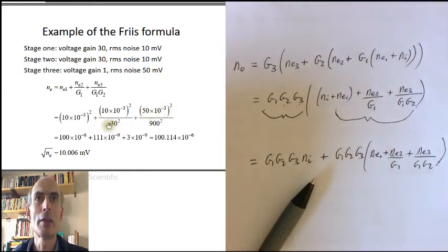Divide by the gain of the first stage, well the voltage gain is 30, so the power gain is 30 squared, and similarly G1 times G2 would be 30 squared times 30 squared, which is 900 squared.